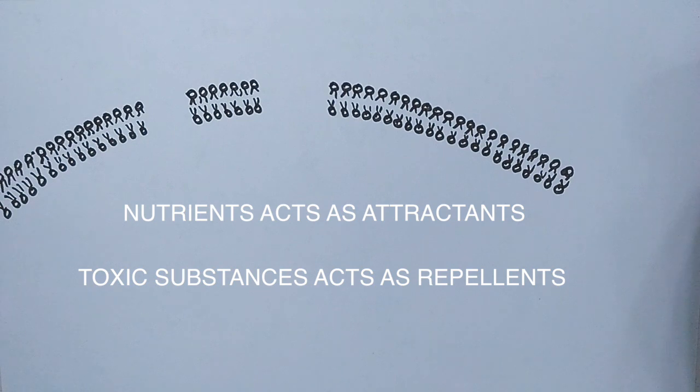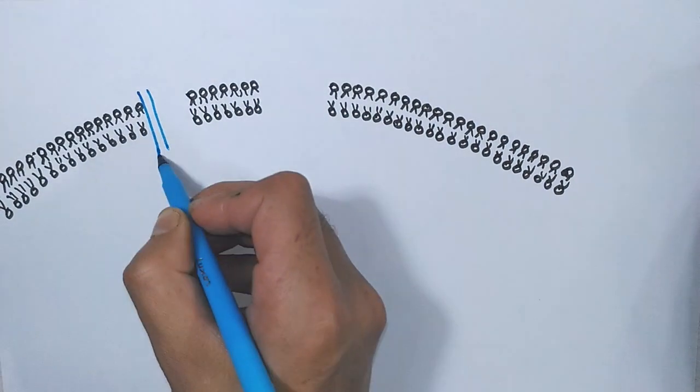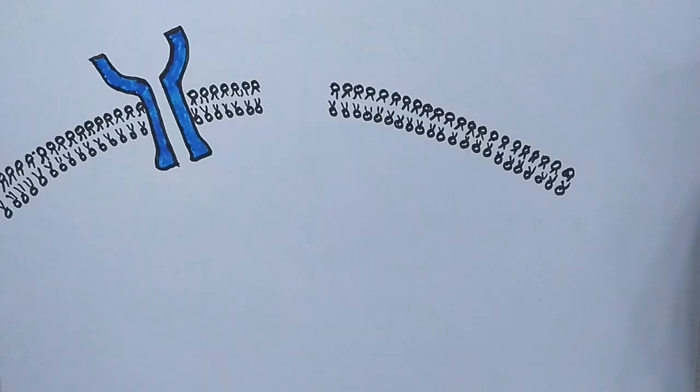So how this is accomplished by bacteria will be discussed now. For this chemotaxis pathway, the receptor which mediates the chemotaxis in bacteria is present on the membrane in the form of MCP, methyl accepting chemotaxis protein. It's a receptor protein which is able to detect the repellents and attractants in the environment.